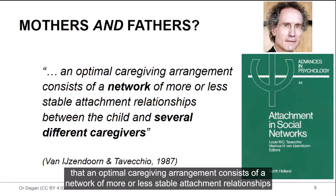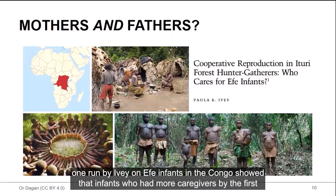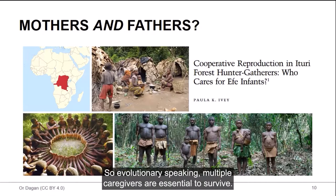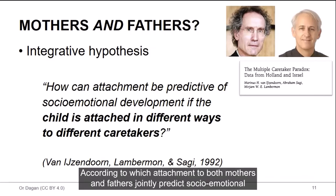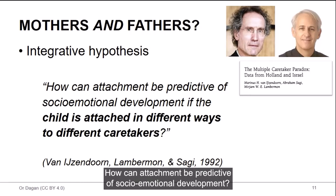But 35 years ago, Marinos van IJzendoorn already stated that an optimal caregiving arrangement consists of a network of more or less stable attachment relationships between a child and several different caregivers. And studies, anthropological studies, such as the one run by Ivy on Efe infants in the Congo, showed that infants who had more caregivers by the first year tended to actually survive in higher chances by the end of the third year. So evolutionary speaking, multiple caregivers are essential to survive. So in 1992, Marinos van IJzendoorn and Avis Sagi-Schwartz took this ecological, or I would say more ecologically valid idea, and proposed the integrative hypothesis, according to which attachment to both mothers and fathers jointly predicts socio-emotional outcomes better than attachment to one caregiver. And they stated a paradox, how can attachment be predictive of socio-emotional development if the child is attached in different ways to different caretakers?